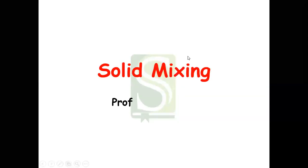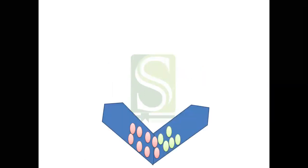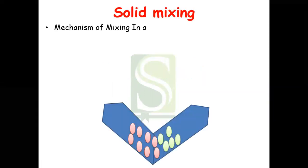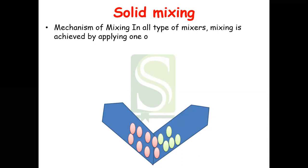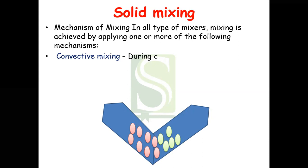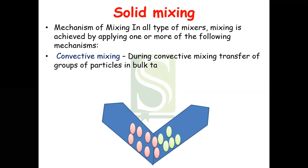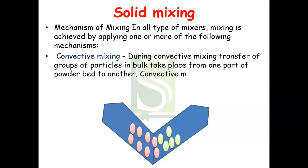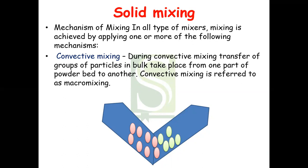Welcome dear friends. Today we are going to see solid mixing. Solid mixing is the mechanism of mixing in all types of mixes. Mixing is achieved by applying one or more of the following mechanisms. The first is convective mixing. During convective mixing, there is transfer of groups of particles in the bulk, from one part of the powder bed to another.